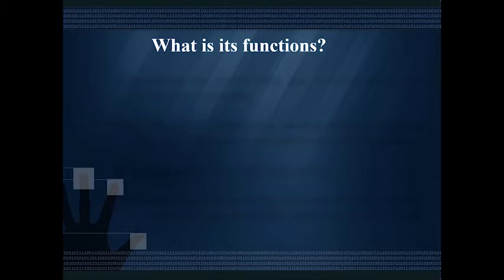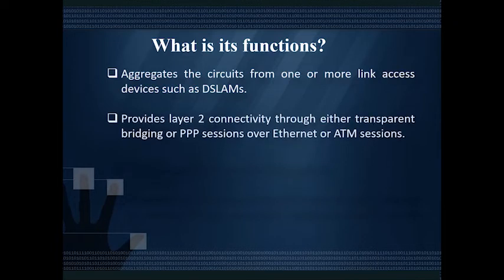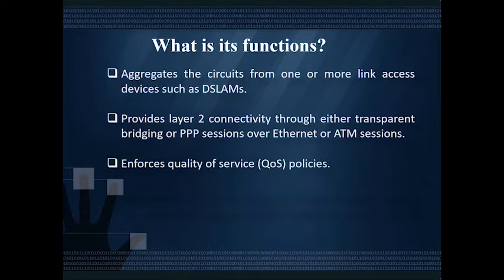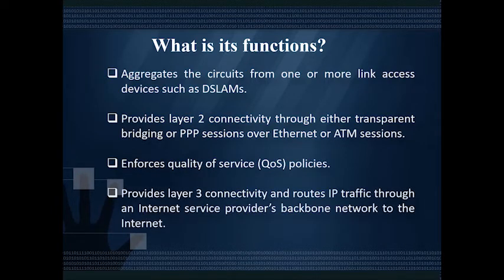Next, we need to know about its functions. BRAS aggregates circuits from one or more link access devices such as DSLAMs. It provides Layer 2 connectivity through either transparent bridging or PPP sessions over Ethernet or ATM sessions. It enforces QoS policies, and provides Layer 3 connectivity by routing IP traffic through an ISP's backbone network.